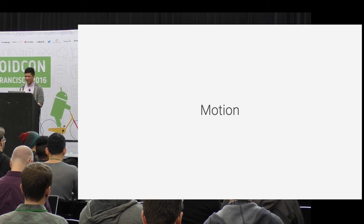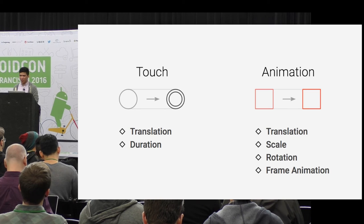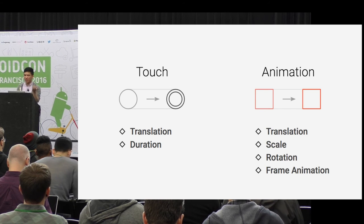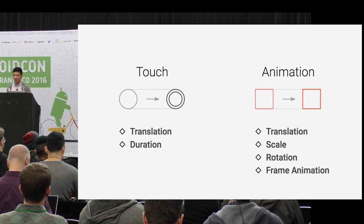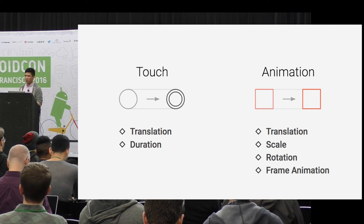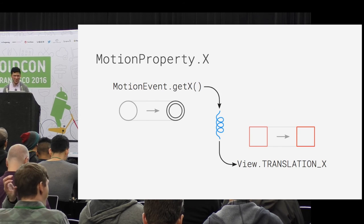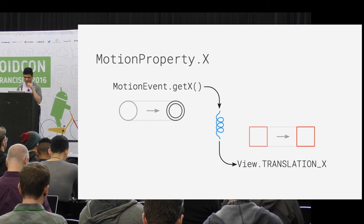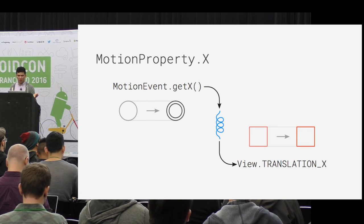So that's the same rebound animation but in Backboard. For the X motion in Backboard - there are only so many interactions possible. You have motion events with translation, and you have animations which are translation, scale, rotation, and maybe frame animations. A motion property X maps getX to translationX.